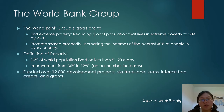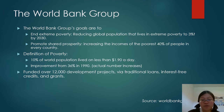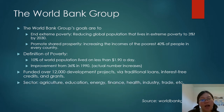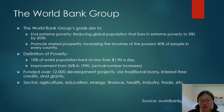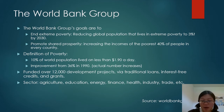The World Bank Group claims it has funded over 12,000 development projects via traditional loans, interest-free credits, and grants. Some of the sectors listed include agriculture, education, energy, finance, health, industry, and trade. Development really involves a lot of different sectors.